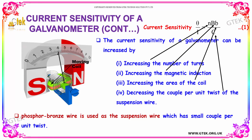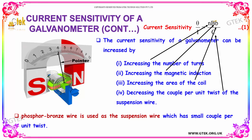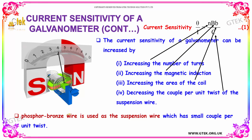The current sensitivity of the galvanometer can be increased by increasing the number of turns, by increasing the magnetic induction, and by increasing the area of the coil. It can also be increased by decreasing the couple per unit twist of the suspension wire. Phosphor bronze wire is used as a suspension wire, which has a small couple per unit twist.